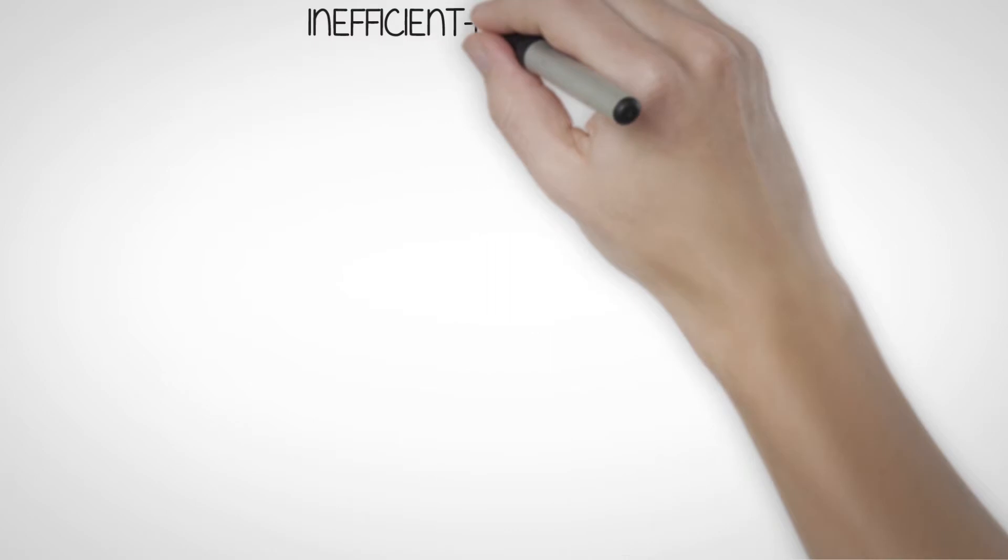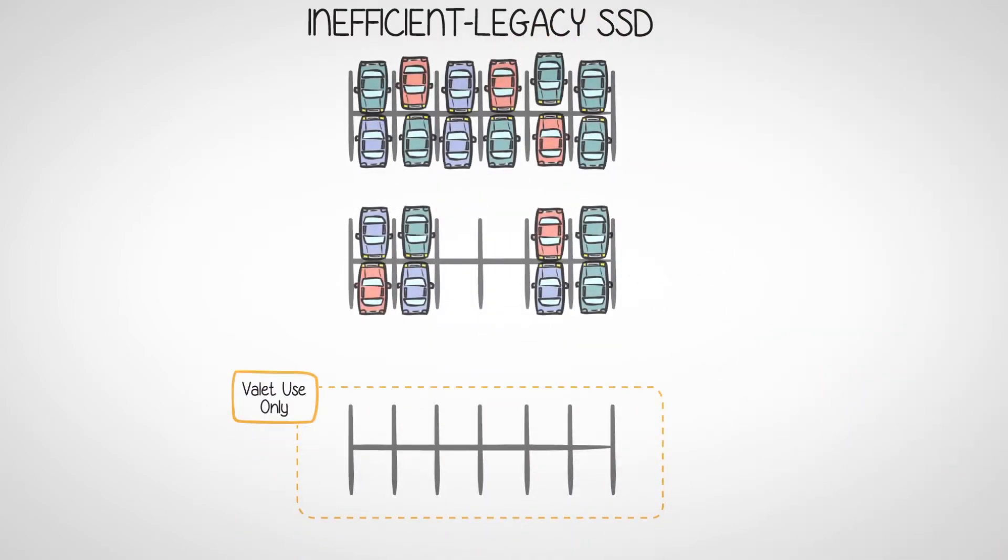Open-channel technology saves money by giving you the flexibility to control or even eliminate large over-provisioning for specific workloads. Over-provisioning in the parking structure analogy means reserving extra parking spots in case of large incoming traffic or a large semi-RV showing up to park.